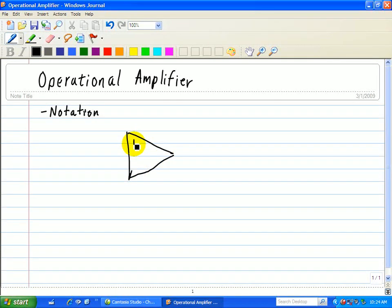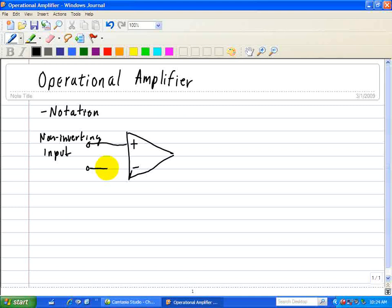It has two input terminals, one plus and one minus. The one associated with a plus is called the non-inverting input, and the one connected to the minus sign is the inverting input.